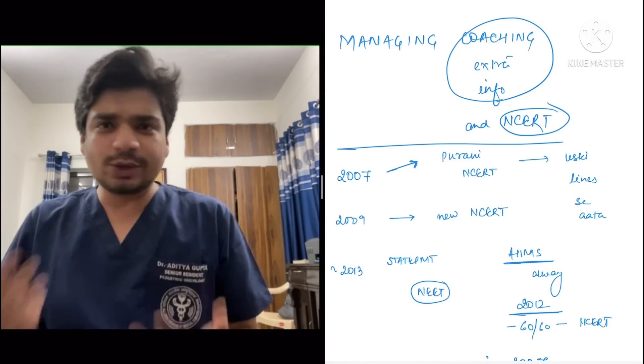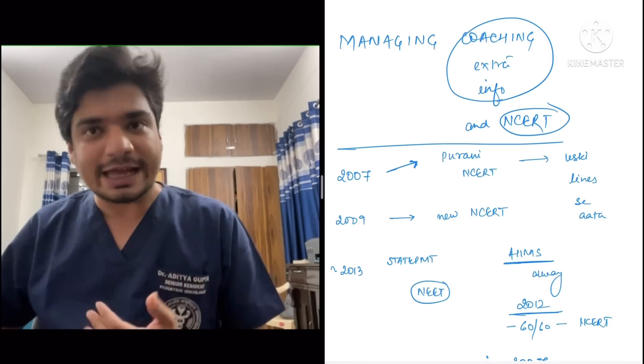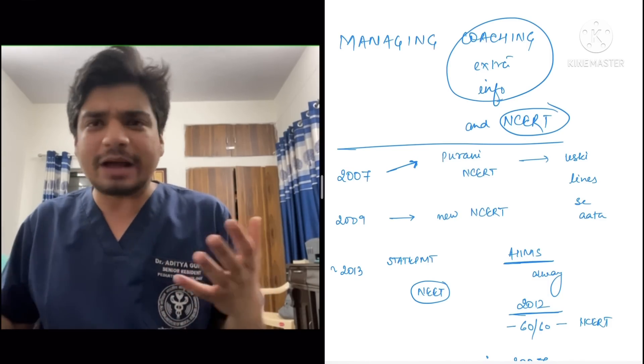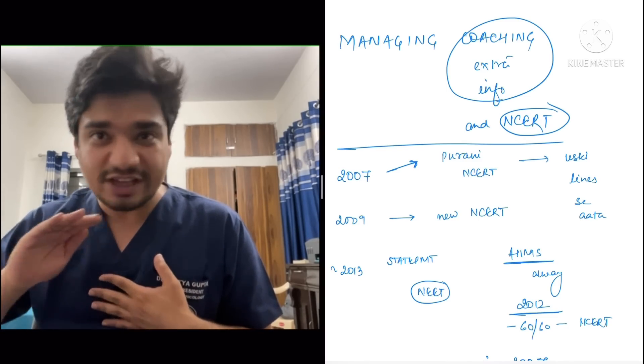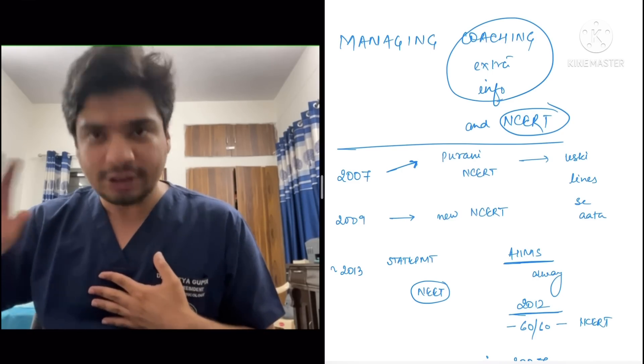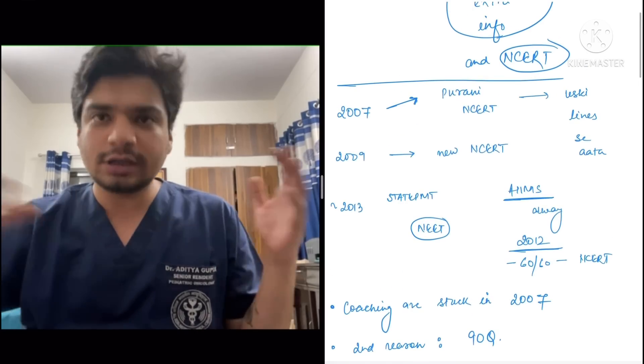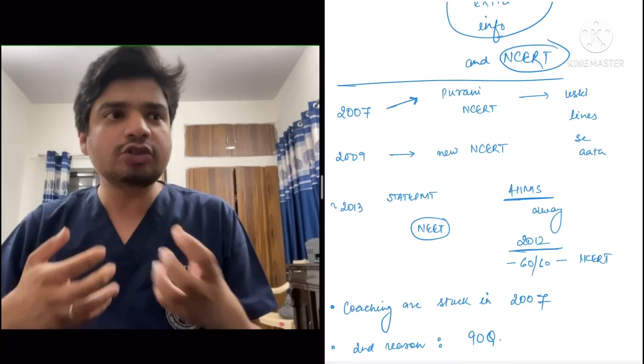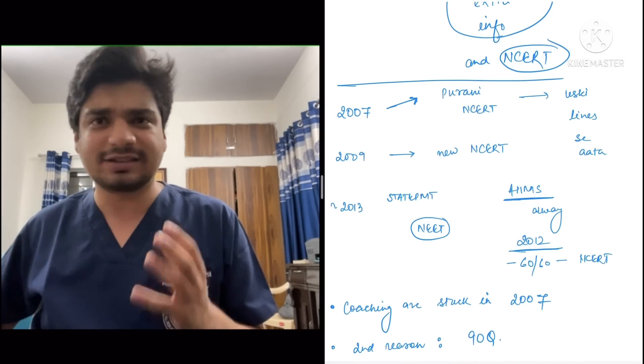And while you already know that more than 90-95% of the paper will come from NCERT, but it will seem that NCERT what they're teaching is just 10% and 90% is they are teaching out of NCERT. So before going into why this happens, let me tell you a brief history of how the NEET paper, AIPMT, NEET and AIMS paper has evolved.